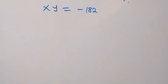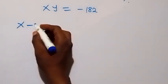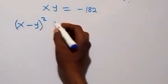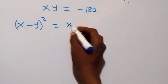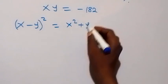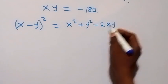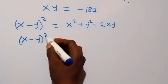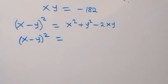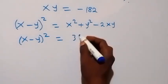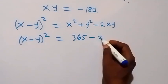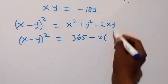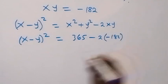To get x minus y, we use the identity: x minus y, squared, when expanded gives x squared plus y squared minus 2xy. So x minus y squared equals the value from equation 4, which is 365, then minus 2 times xy, where xy is minus 182.